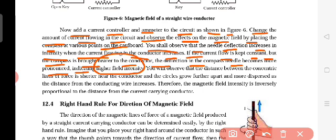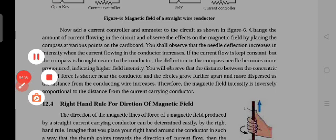If the magnetic compass is bringing nearer to the electric wire conductor, it will be deflecting more. When we are taking it far, it is deflecting less, indicating higher field intensity. Higher field intensity means the electricity is flowing more and the magnetic field is also increasing. The magnetic field depends upon the distance also. You will observe that the distance between the concentric lines of force is shorter near the conductor and the circles grow farther apart and more dispersed as the distance from the conducting wire increases. Therefore, the magnetic field intensity is inversely proportional to the distance.